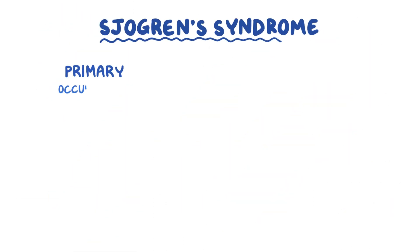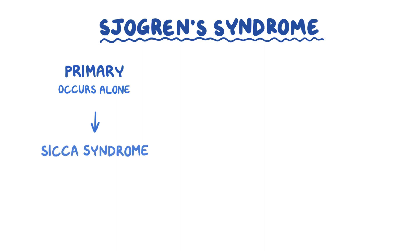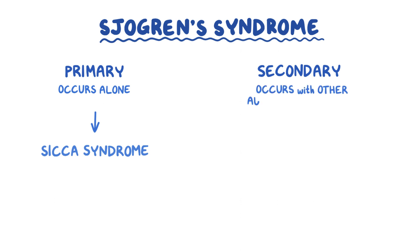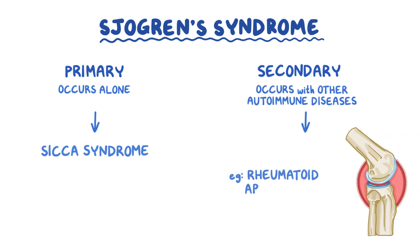Sjogren's syndrome can be primary and happen alone, and in that situation it's called Sica syndrome. Alternatively, it can be secondary, which is when it happens along with other autoimmune diseases like rheumatoid arthritis.